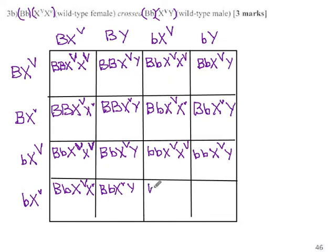Two little b's, X, big V, X, little v. And two little b's, big V, X, little v, and Y. Whew, okay. So that's all the bugs. Now, what do they actually look like? What do we get for phenotypes?